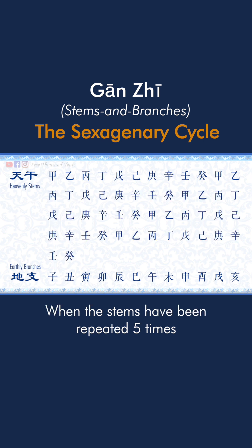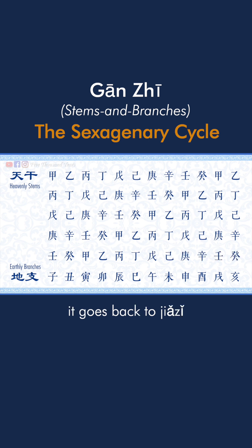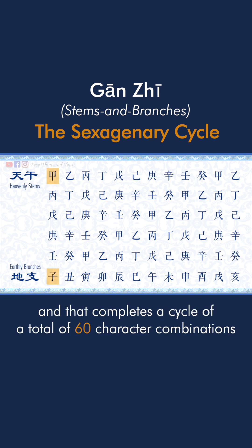When the stems have been repeated 5 times, it goes back to jiazi, and that completes a cycle of a total of 60 character combinations.